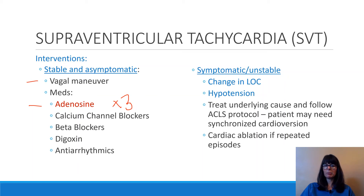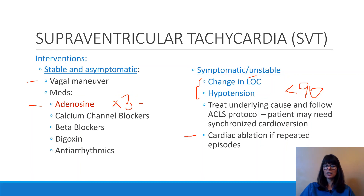If the patient is unstable and symptomatic — meaning a change in level of consciousness or hypotensive with a systolic blood pressure of less than 90 — we have to treat the underlying cause and follow ACLS protocol. Adenosine is included in ACLS protocol, but if that is not working and the patient is now unstable, the patient might need to undergo synchronized cardioversion. If the patient has repeat episodes of SVT, becomes unstable, and requires frequent hospitalizations, the physician might suggest a cardiac ablation — a cardiac catheterization where they determine where that irritable focus is located above the ventricles, then ablate it, essentially burning that focus away so the issue is resolved.